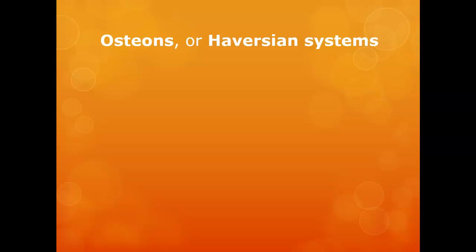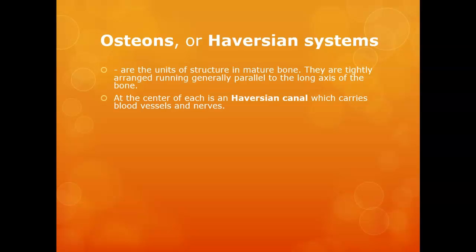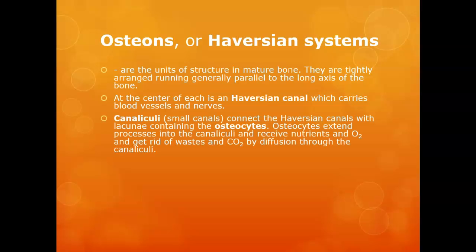Bones are composed of osteons — the older name is Haversian systems. These osteons are usually running in a parallel arrangement to the long axis of the bone; they go with the long shaft, not perpendicular. At the center of each osteon is a canal called the osteonic canal, also known as the Haversian canal, and that's what blood vessels and nerves travel through.